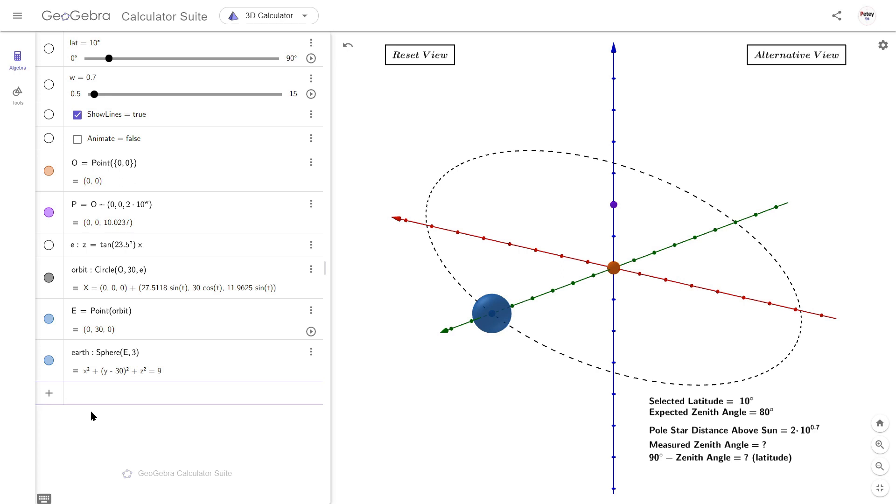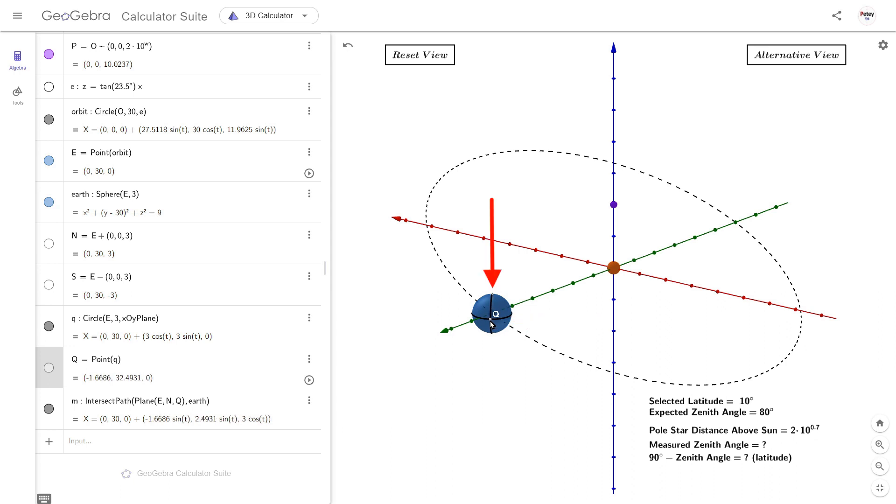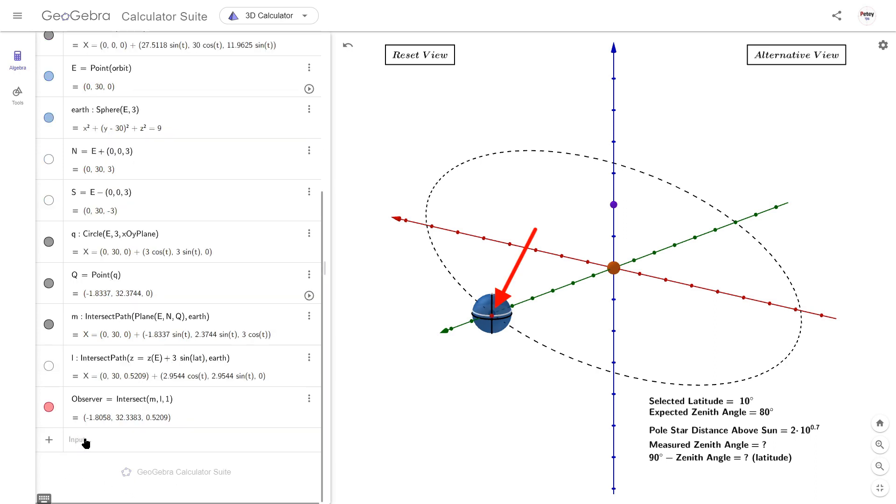Next to add are the north pole, the south pole, the equator, and the meridian line that can rotate by way of this point, Q. Now we're ready to add our observer using the intersection point of the meridian line we've just added, with a circle of latitude which is governed by the lat slider above.